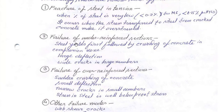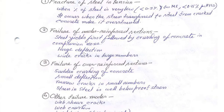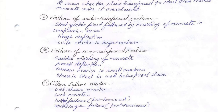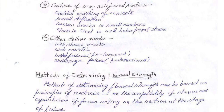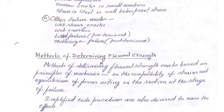The next mode is failure of an under-reinforced section: steel yields first followed by crushing of concrete in the compression zone, showing large deflections and wide cracks. For an over-reinforced section there is sudden crushing of concrete with small deflection — brittle failure with narrow cracks — and stresses in steel are well below the proof stress. Other failure modes include web shear cracks, web crushing, bond failure in pre-tension members, and anchorage failure in post-tension members.